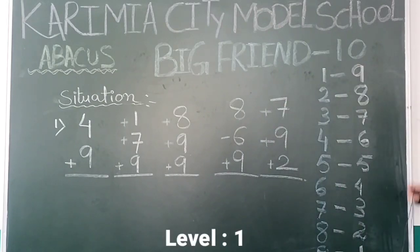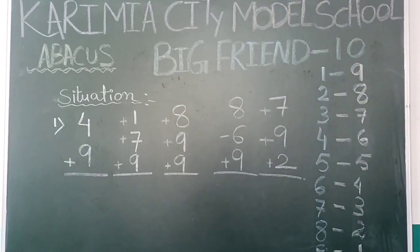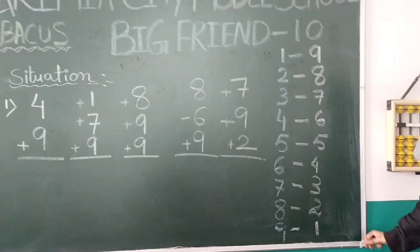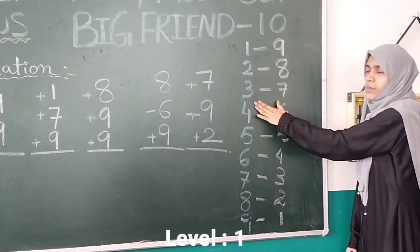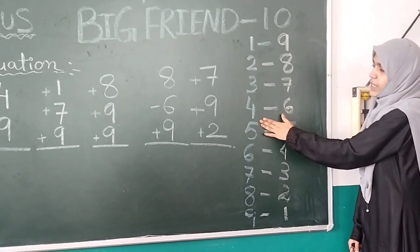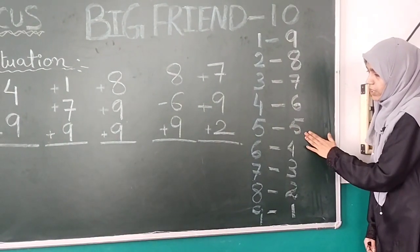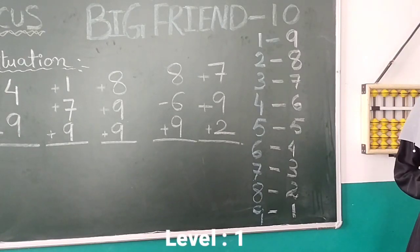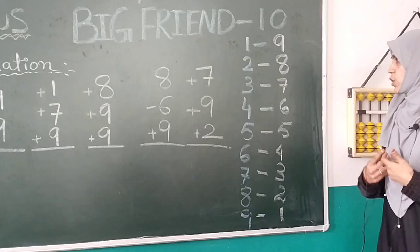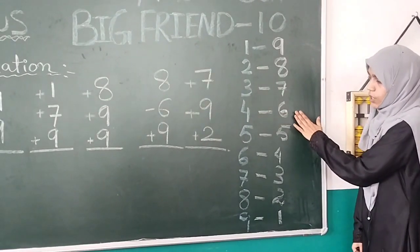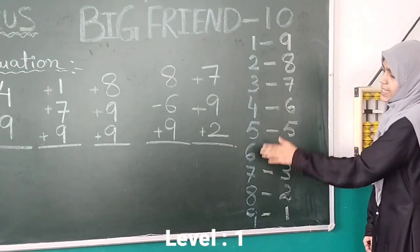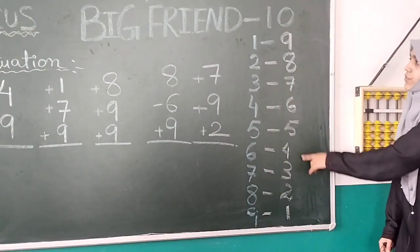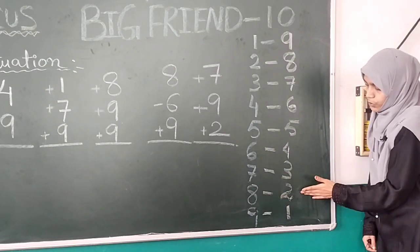As we all know, we have best friends too, and these numbers have best friends. One is best friend of nine, two is best friend of eight, three is best friend of seven, four is best friend of six, and five is best friend of five. Friendship is mutual — if four is friend of six, six is also friend of four. If three is friend of seven, seven is also friend of three.